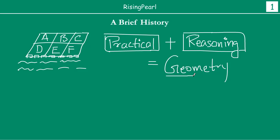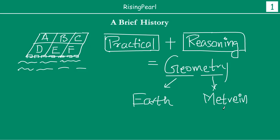Now if you look at the word geometry, it is made of two Greek words. 'Geo' means earth, and 'metri' comes from the Greek word 'metrian' which actually means to measure. So the word geometry means to measure earth — which is basically to measure land. This is how the word geometry got its meaning, and how different civilizations across the world contributed together to what we call today as geometry.